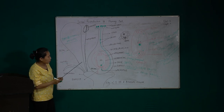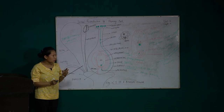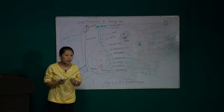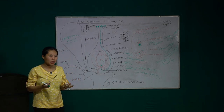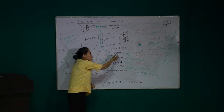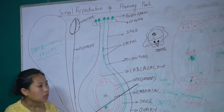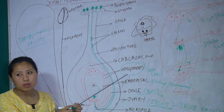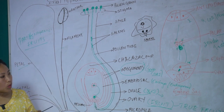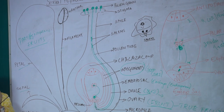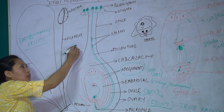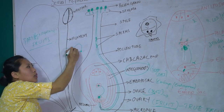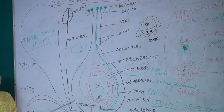When you look at a pea seed or gram, you find a hard covering. We peel that hard covering and eat the inside. That covering is the seed coat — the integument develops into the hard seed coat. Usually, a small opening is present at one end of the pea seed called the micropyle.